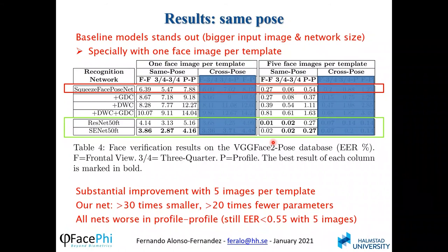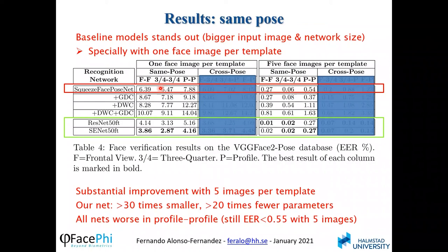The two ResNet-50 baseline models are of course better than our architecture, especially with one image per template. With five images per template, our model achieves below 1% EER in same-pose comparisons. Our network is 30 times smaller with 20 times fewer parameters. We are very happy with these results, especially with five images, where the EER is less than 0.54% even in profile versus profile comparisons — a difficult case where the face is visible from only one side.